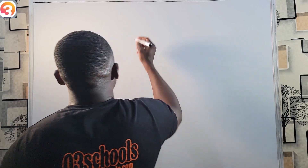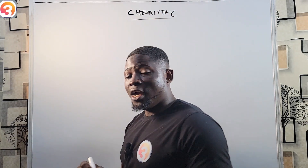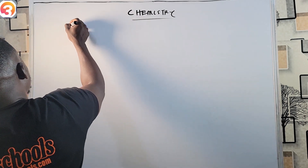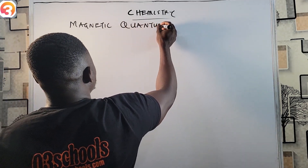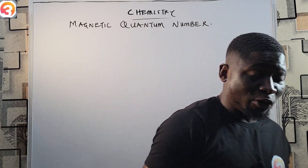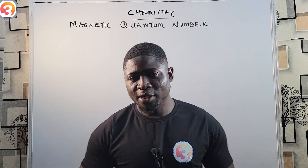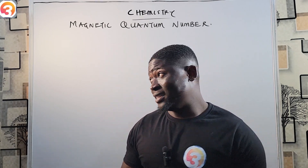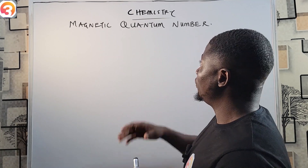Hello guys and welcome back to JAM Chemistry class. Chemistry is a beautiful subject. In today's class I'm going to be looking at the magnetic quantum number. Before now we have seen that there are four quantum numbers used to describe the results of experiments: the principal quantum number, the azimuthal or subsidiary quantum number, the magnetic quantum number, and the spin quantum number — which we have discussed in previous episodes. In this episode we're looking at the magnetic quantum number.